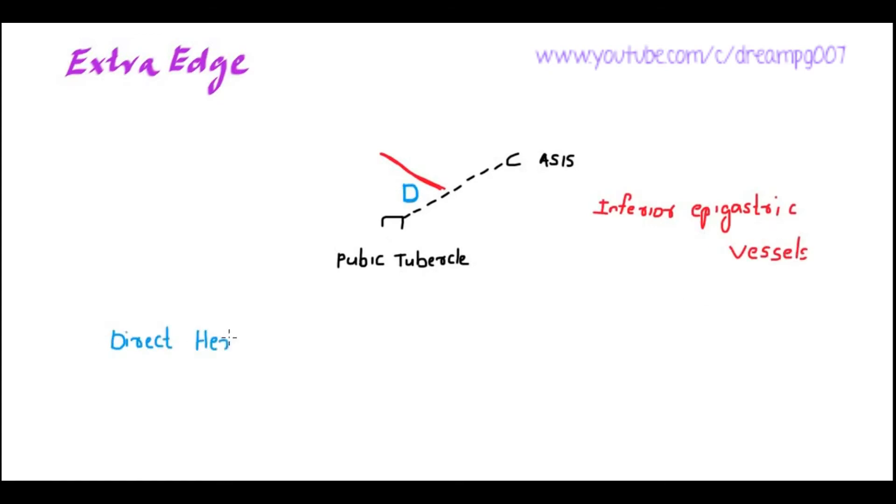Hernias which occur medial to the inferior epigastric vessels are direct hernias, and hernias which occur lateral to the inferior epigastric vessels are indirect hernias.